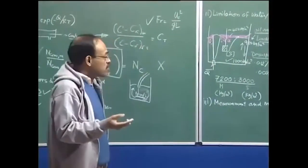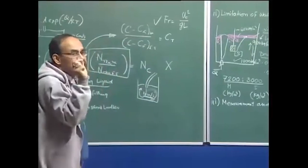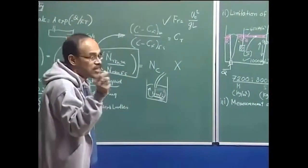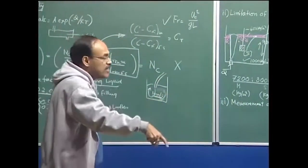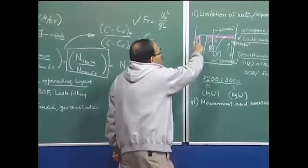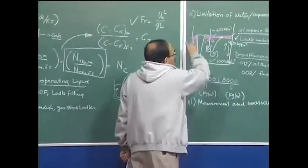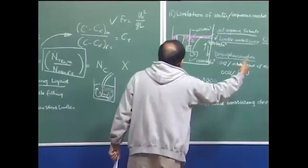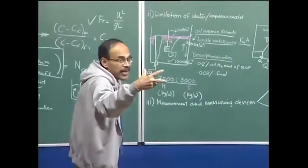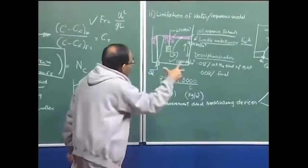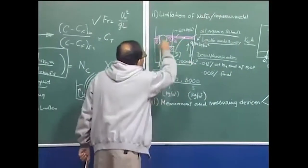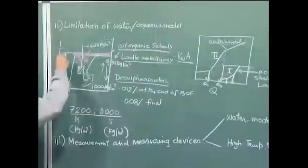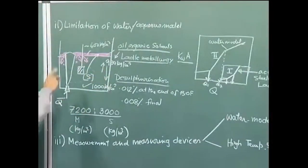We can also take neutrally buoyant particles — for example, tiny glass spheres of micron size. If you add those particles inside, they follow the streamlines of the fluid and give you the recirculating pattern. If you illuminate the system properly, you can take a camera and capture the movement of those glass particles, then look at the computer screen or TV screen to find out what the overall flow pattern is in the system.